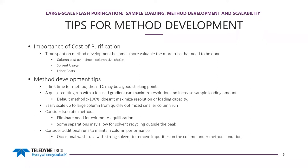It's easy to scale up to the large column from a quickly optimized smaller column run. If you're doing multiple iterations of purification over time with multiple injections, consider using isocratic methods — this could eliminate the need for column equilibration. If you've got a really pure starting material with two closely eluting compounds, isocratic methods can separate those and minimize column equilibration needs, and potentially enable solvent recycling outside the peak. When doing method development with multiple runs over time, consider wash runs at the end or after so many runs to restore the column by removing impurities that bound under the optimized method conditions.